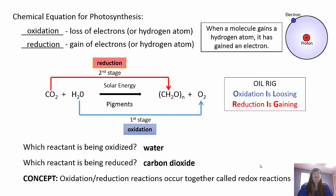That may sound funny, because if you're gaining something, how is something being reduced? The important thing to keep in mind is that electrons carry a negative charge. So if you're gaining a negative charge, you actually become less — you become lower, so you're reduced. With oxidation, you're losing that electron, losing that negative charge and becoming higher. With reduction, you're gaining that negative charge. Things that are oxidized lose electrons or hydrogen atoms, and things that are reduced gain electrons or hydrogen atoms.